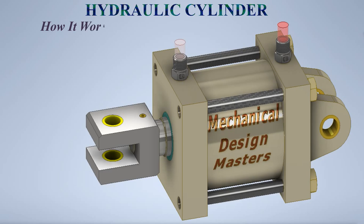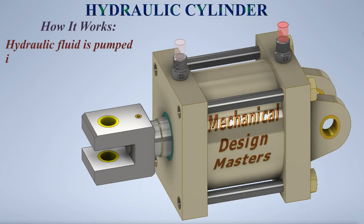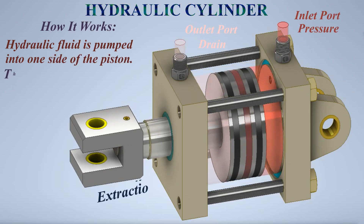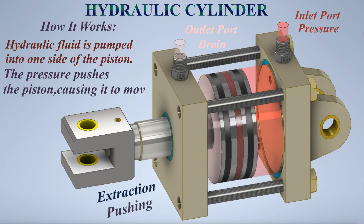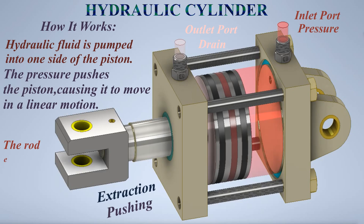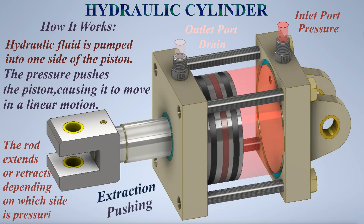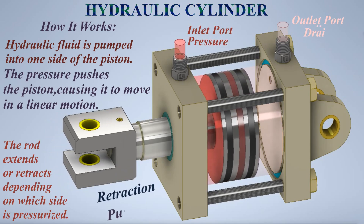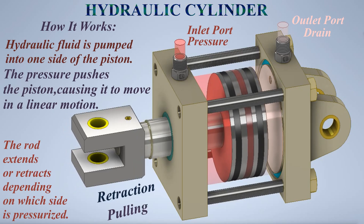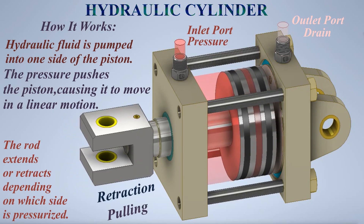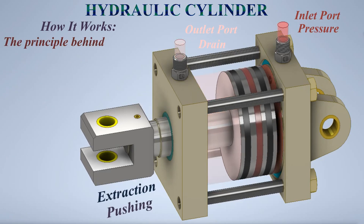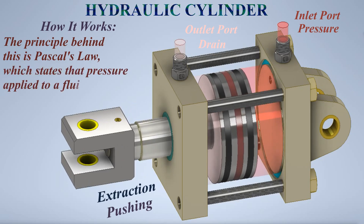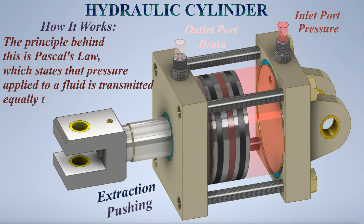How it works. Hydraulic fluid is pumped into one side of the piston. The pressure pushes the piston, causing it to move in a linear motion. The rod extends or retracts depending on which side is pressurized. The principle behind this is Pascal's Law, which states that pressure applied to a fluid is transmitted equally throughout the fluid.